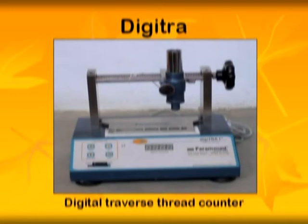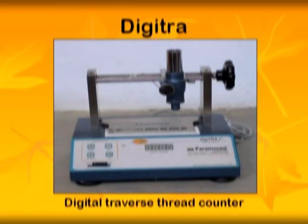The digital traverse thread counter has a microprocessor-based control panel and five individual slots. It has built-in light intensity control and other accessories, and is used for quick and accurate measurement of thread density.